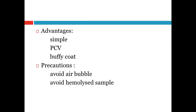Advantages of the Wintrobe method: it is a simple method, and we can also obtain PCV (packed cell volume) and buffy coat values. Precautions include avoiding air bubbles in the tube and avoiding a hemolyzed sample, as both of these can cause incorrect readings.